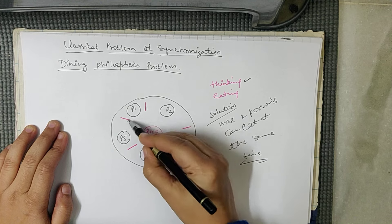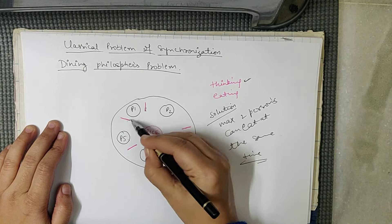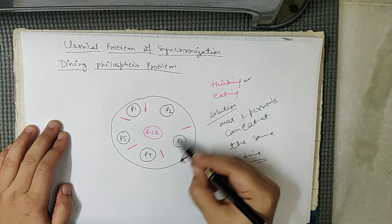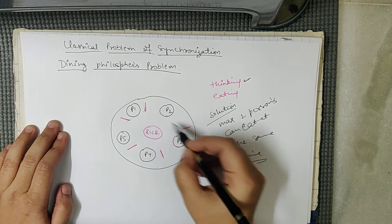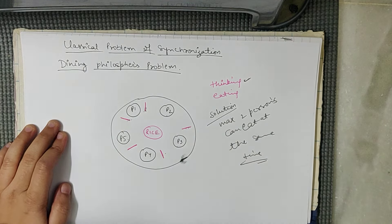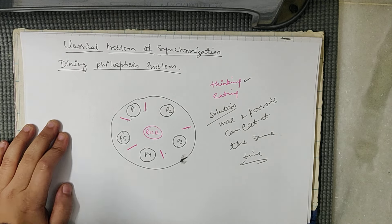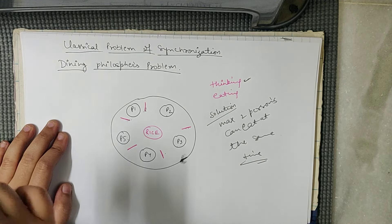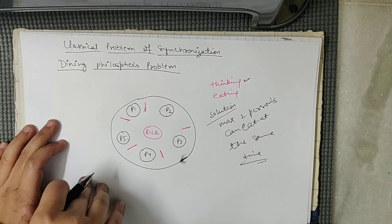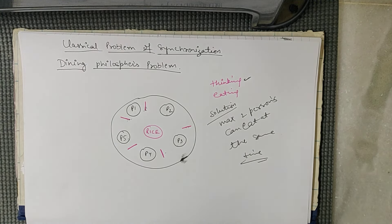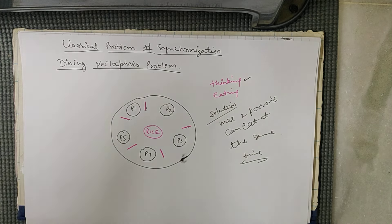For example, P1 if we take these two spoons, then P3 can also do this like this. Or P2 and P4, P2 and P4, we take this, we can do this. Otherwise, at the same time everyone can't eat. So this is the Dining Philosophers Problem. I hope this is clear now. Thanks for watching my video and please subscribe my channel, thank you so much.